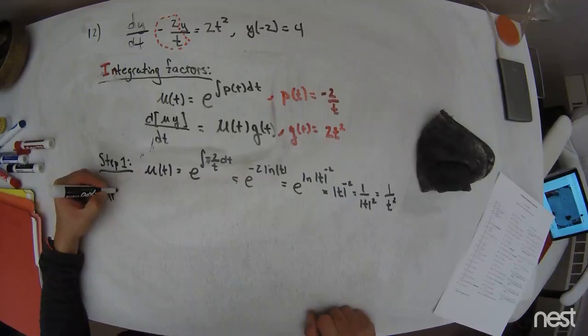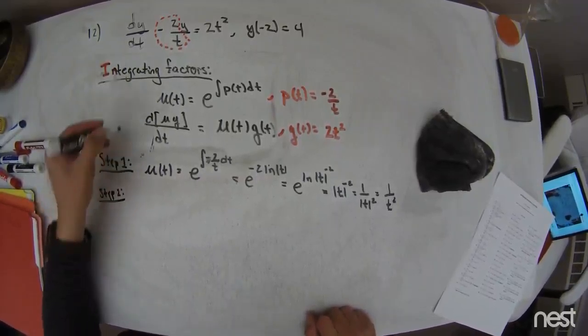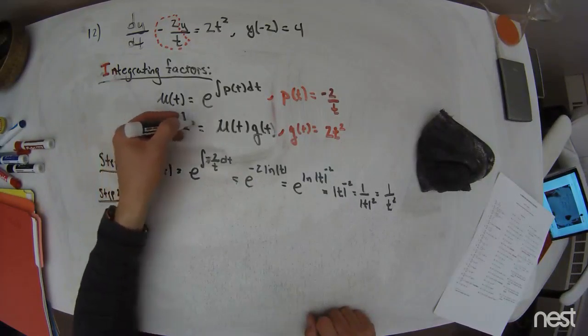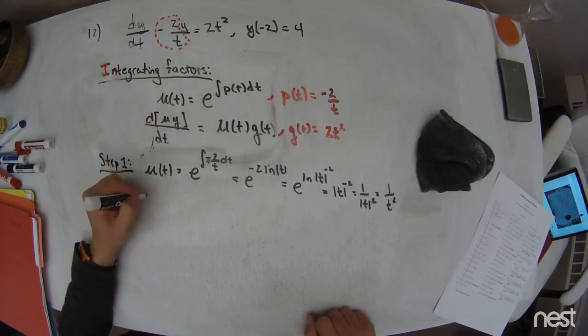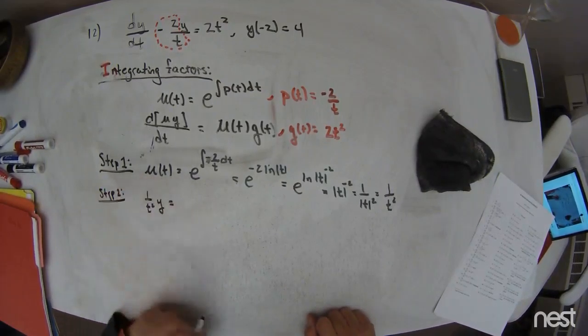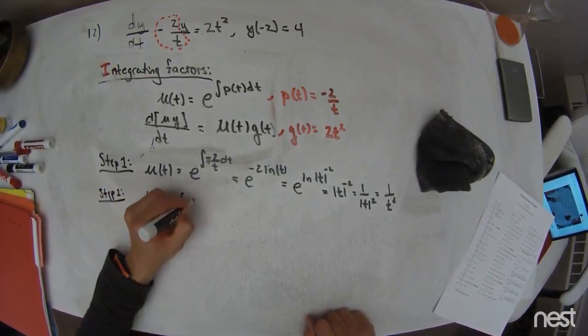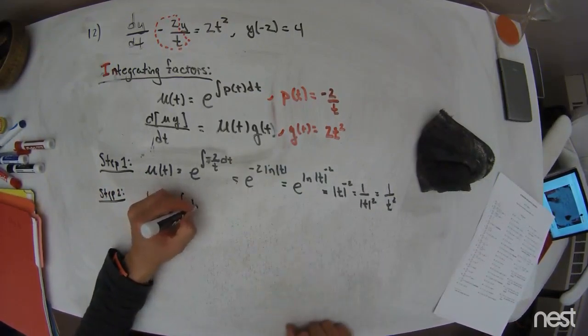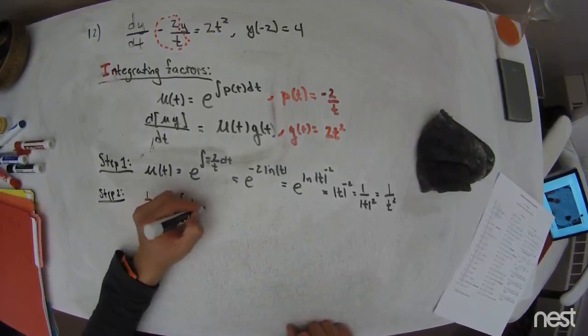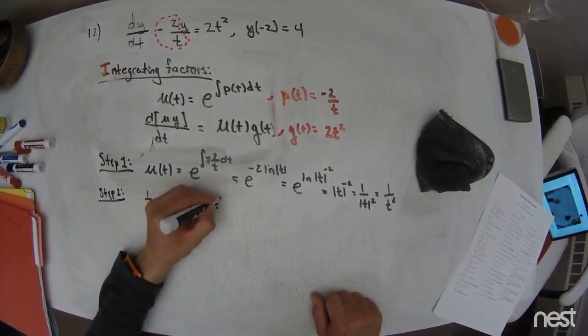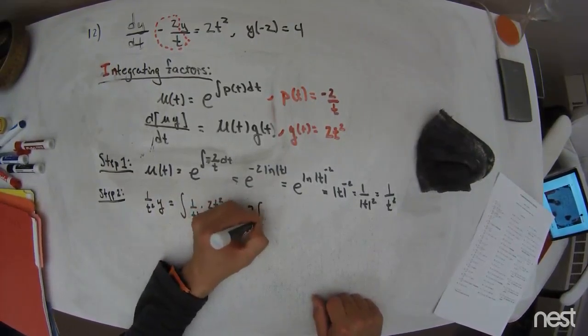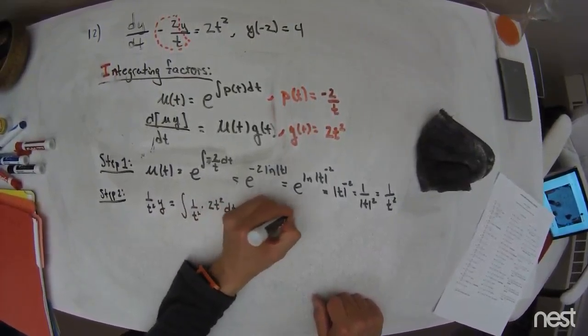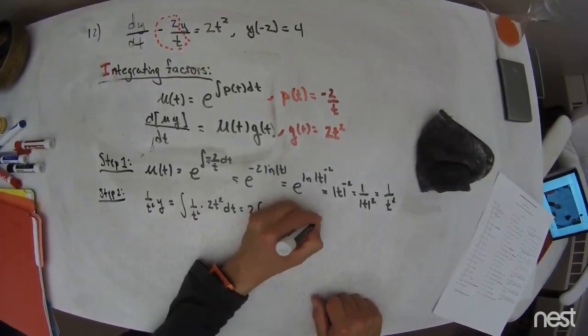Now for step 2, I have that the derivative of mu times y is equal to mu times g, so I have that mu, 1 over t squared times y, which is my unknown function I'm hoping to find, is equal to the integral of mu of t, 1 over t squared, times g of t, which is 2 times t squared. Integrate that on t, so this is 2 times the integral with respect to t, so this is 2 times t plus c.